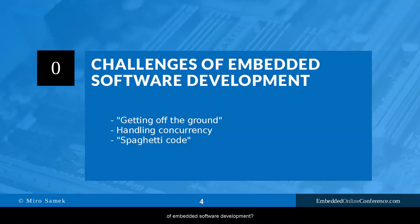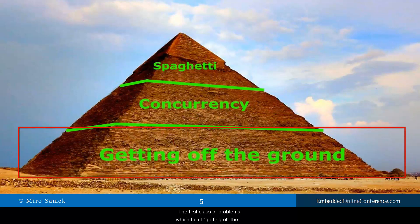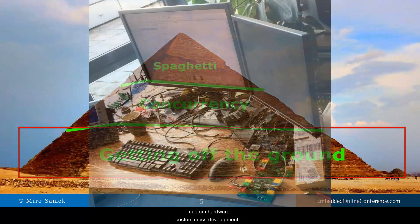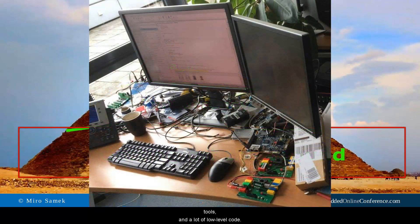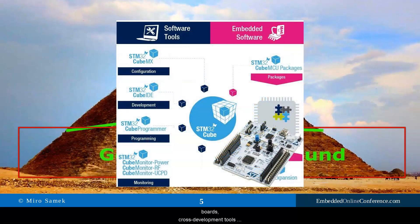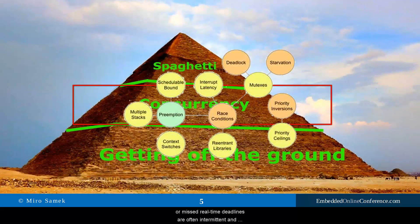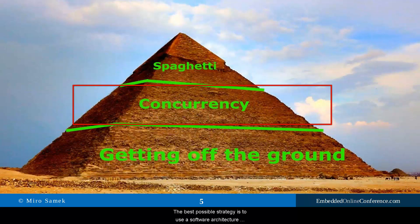What are the main challenges of embedded software development? I would classify them into broad categories. The first class, which I call getting off the ground, is unique to deeply embedded development. Embedded systems programming always involves custom hardware, custom cross-development tools, and a lot of low-level code. This class of problems is addressed by MCU vendors providing various platforms, evaluation boards, and cross-development tools bundled with low-level software. Above this lies the next layer of problems related to concurrency and real-time performance. Concurrency problems like race conditions, deadlocks, or missed real-time deadlines are often intermittent and hard to reproduce — notoriously difficult to isolate, fix, and reliably test for. The best strategy is to use a software architecture that inherently prevents most concurrency problems in the first place. This architecture is the main subject of this presentation.